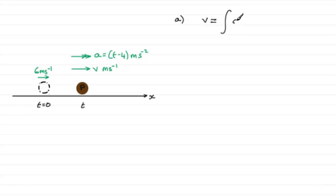If we're working backwards, then to get velocity it equals the integral of acceleration with respect to time. We know what the acceleration is, it's (t - 4), so this is going to be the integral of (t - 4) with respect to time.